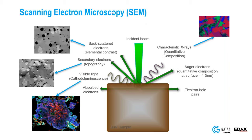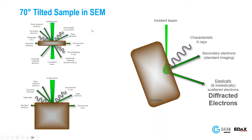For EBSD, we go into somewhat of a hybrid position. We tilt the sample so that electrons can come back out much more easily, almost in a transmission mode. You have the incident beam; you can get characteristic X-rays and secondary electrons. Importantly, we can now see diffracted electrons — these are typically elastically scattered, although we will pick up some that are inelastically scattered. This is where the EBSD signal comes into play.